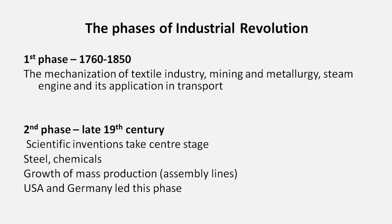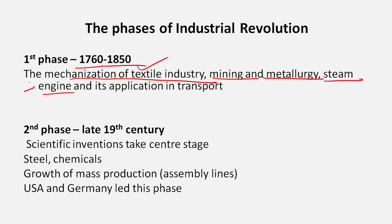The phases of the Industrial Revolution: the first or classic phase was from 1760 to 1850, led by the mechanization of the textile industry — the first to be completely mechanized. Mining and metallurgy saw a lot of development. The steam engine was developed and applied in transport — trains and locomotives. England and the Netherlands were the leaders of this phase.